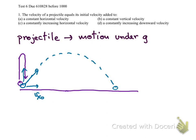Now, if we write down the velocity at any instant, we have Vx equal to Vx0. And Vy is the same as free fall in the vertical direction, so we have Vy0 plus Gt. Taking the upward direction as positive, we must have a negative sign, giving Vy = Vy0 − Gt.